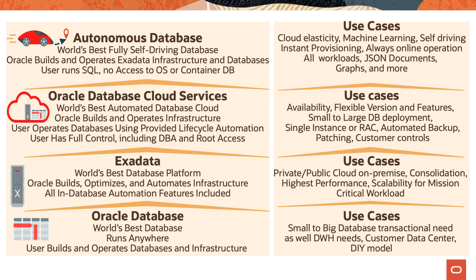Customers also have the ability to deploy single instance or Real Application Clusters with automated backup and patching functionality with full access to the database infrastructure. Next is Exadata, the world's best database platform. Oracle builds, optimizes, and automates the infrastructure deployment; all database automation features are included. Exadata is great for customers building a private cloud either on-premise or on Oracle Cloud Infrastructure, and is ideal for consolidation use cases where customers want to consolidate many databases onto one platform.